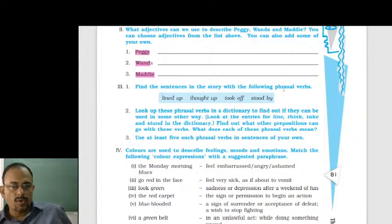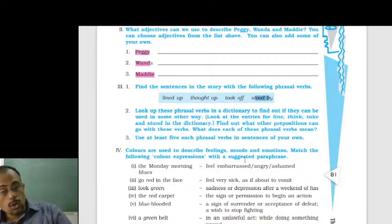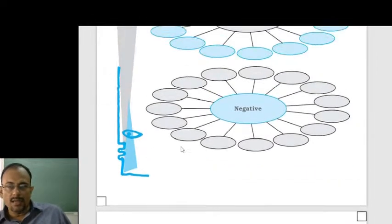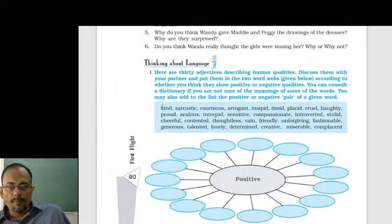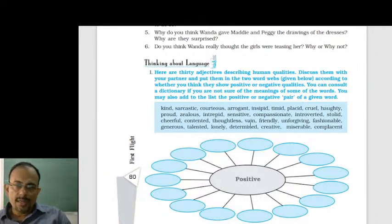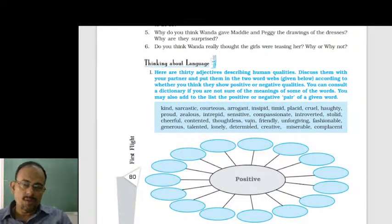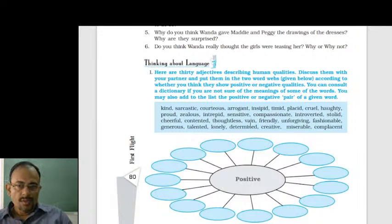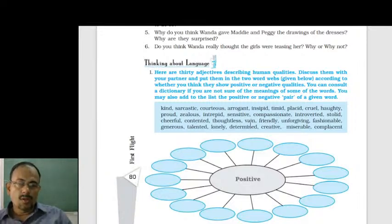Now, let's find sentences in the story with the following phrasal verbs: lined up, thought up, took off, stood by. Dear students, I advise you to write the meanings of the words from these character traits. Make a list of words whose meanings you do not know, write the meaning along with sentences. These words are used to describe a person.